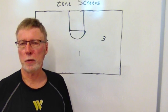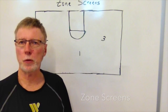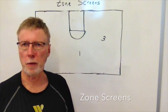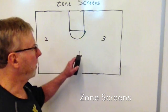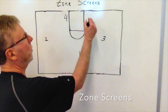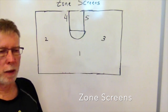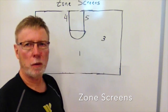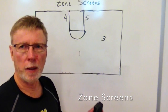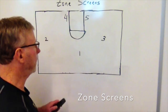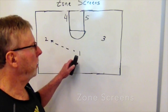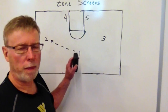Against the zone we also practice five different screens against a typical zone to give them a different look. We line up with one, two, and three man up top and our four and five man down low. Plays number one through four start with our pass to the left.